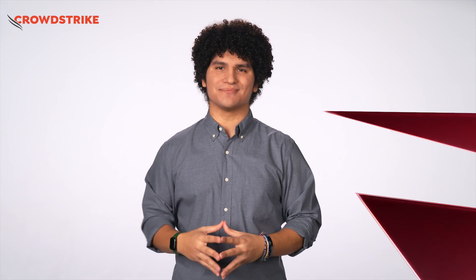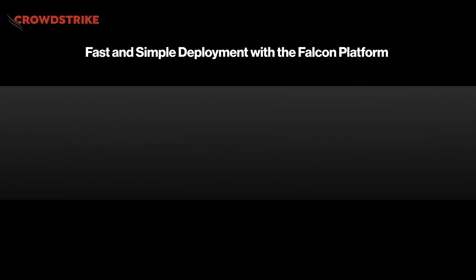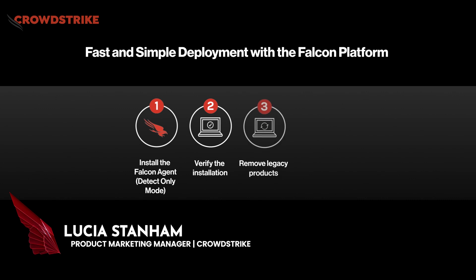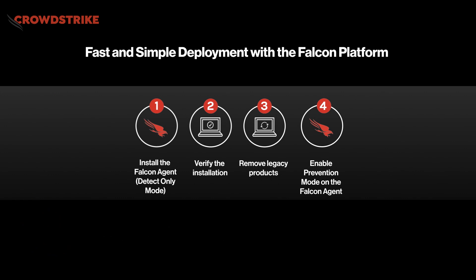Now let's go ahead and see this in action. Let's look at how CrowdStrike makes it fast, simple, and easy to deploy the Falcon agent to your fleet of endpoints. Enabled by CrowdStrike's cloud-native architecture, our lightweight agent can be deployed to thousands of endpoints in a matter of minutes, giving you instant visibility and instant protection. CrowdStrike alleviates many of the typical pain points of onboarding to legacy solutions, with no infrastructure setup, no scanning, no reboots, no fine tuning, and no time-consuming signature updates.